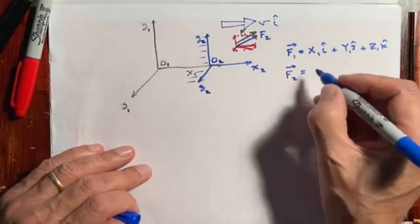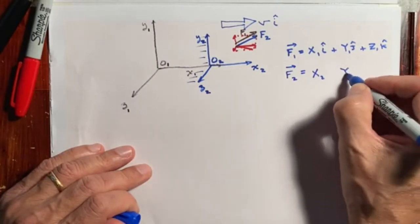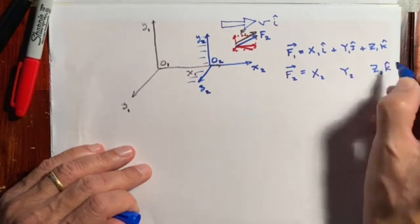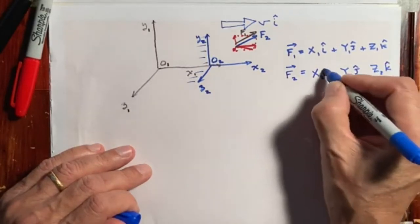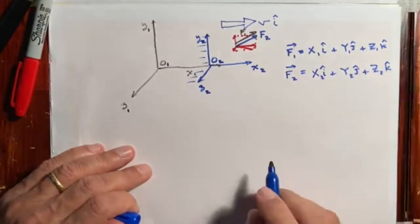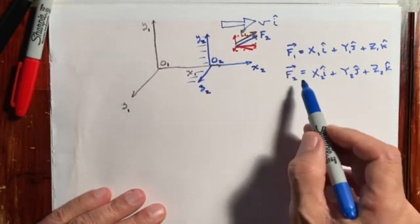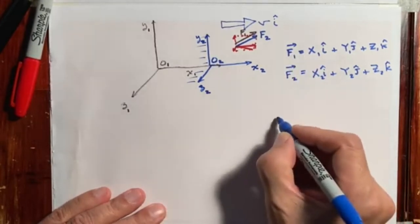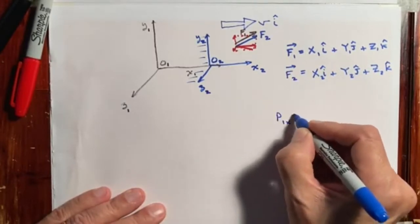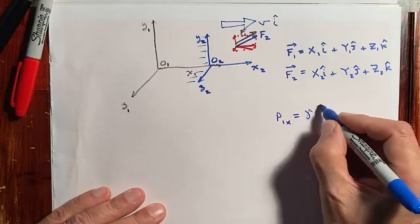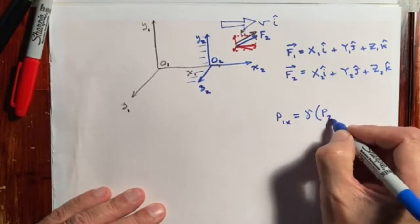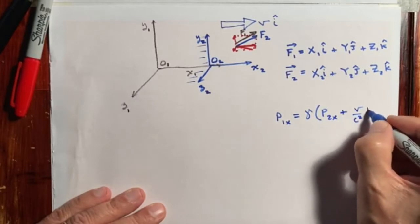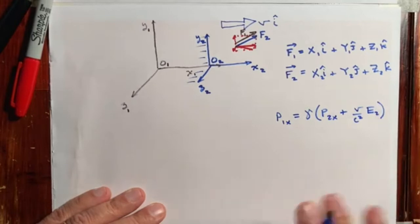F2 is going to be X2 i-hat plus Y2 j-hat plus Z2 k-hat. Before we proceed to figure out the relationship between the two forces, we're going to take some time to note results that won't be derived here but can be derived elsewhere, and we'll take them as given.